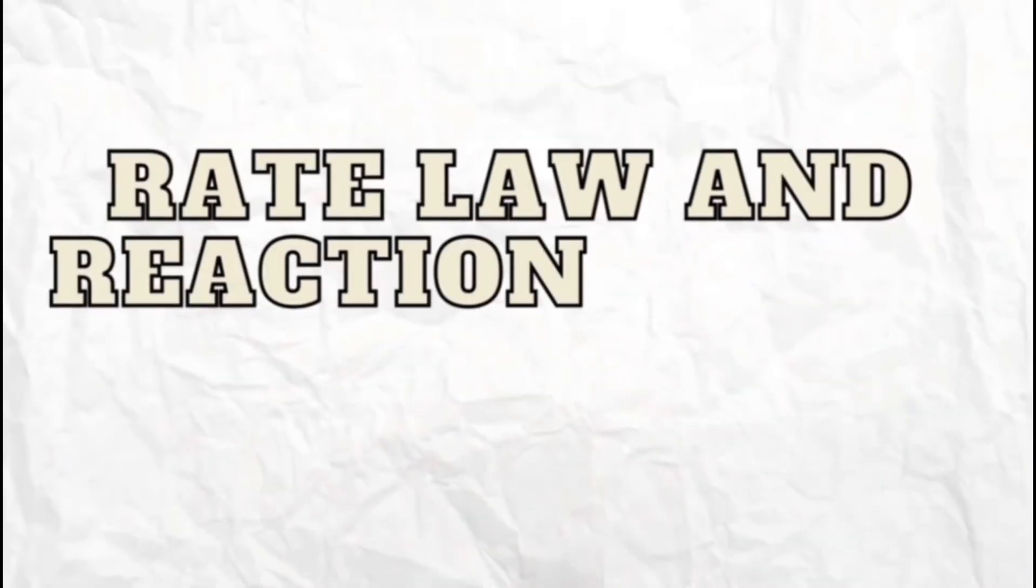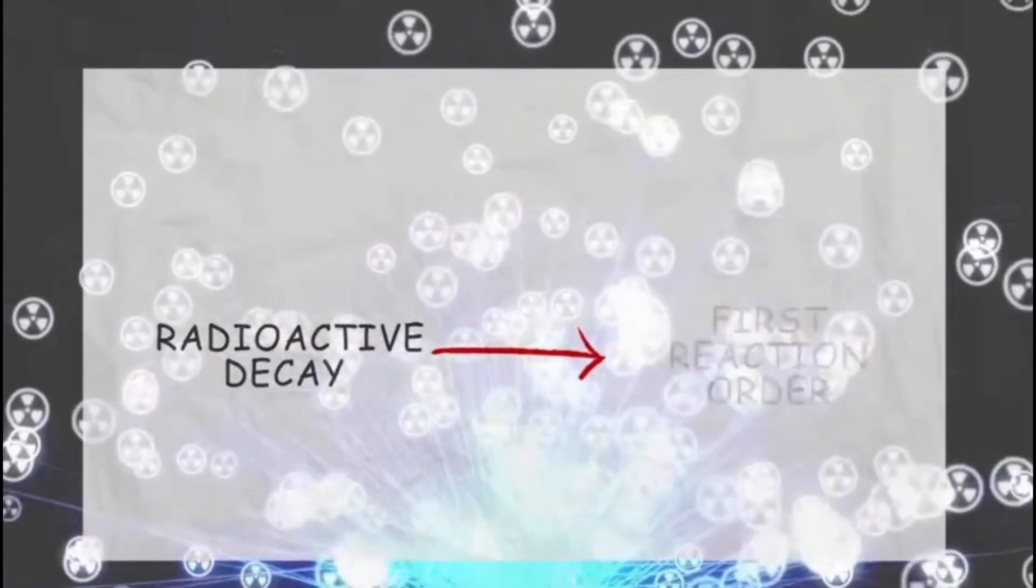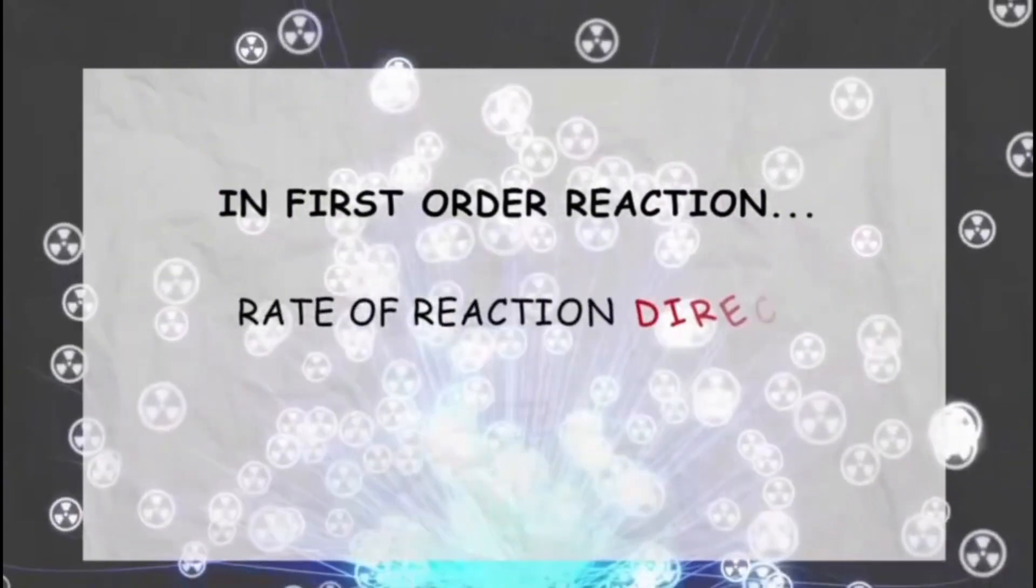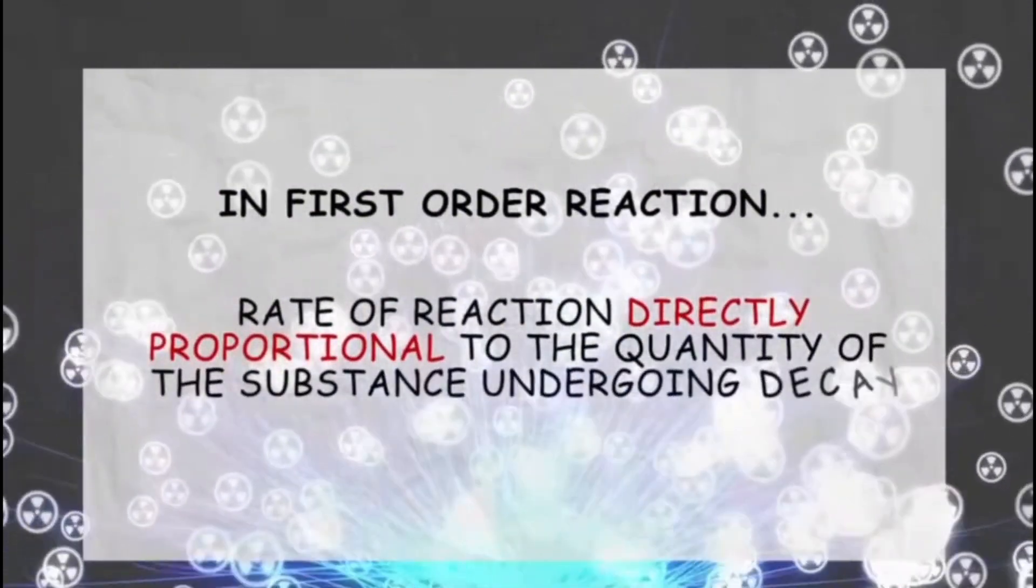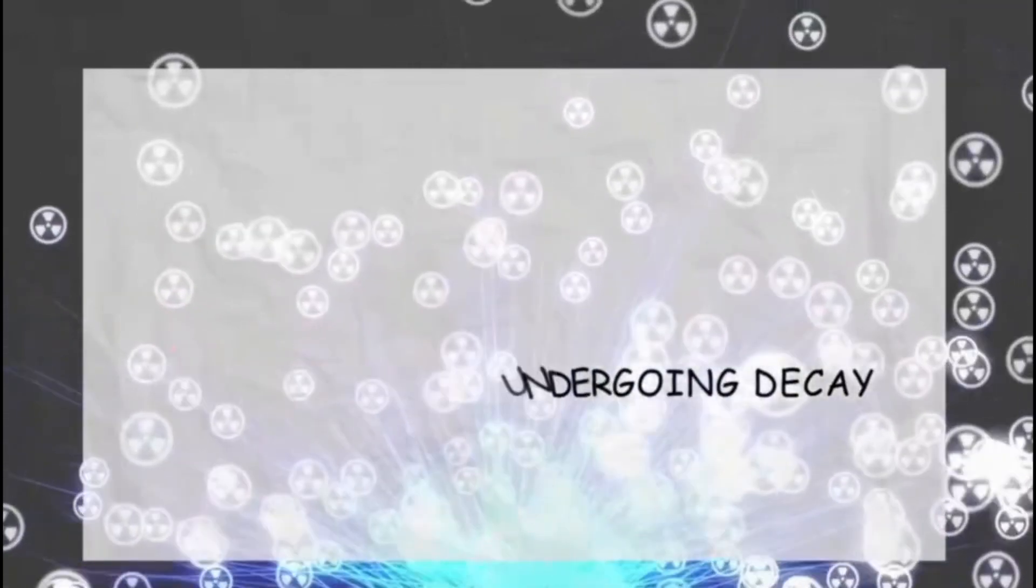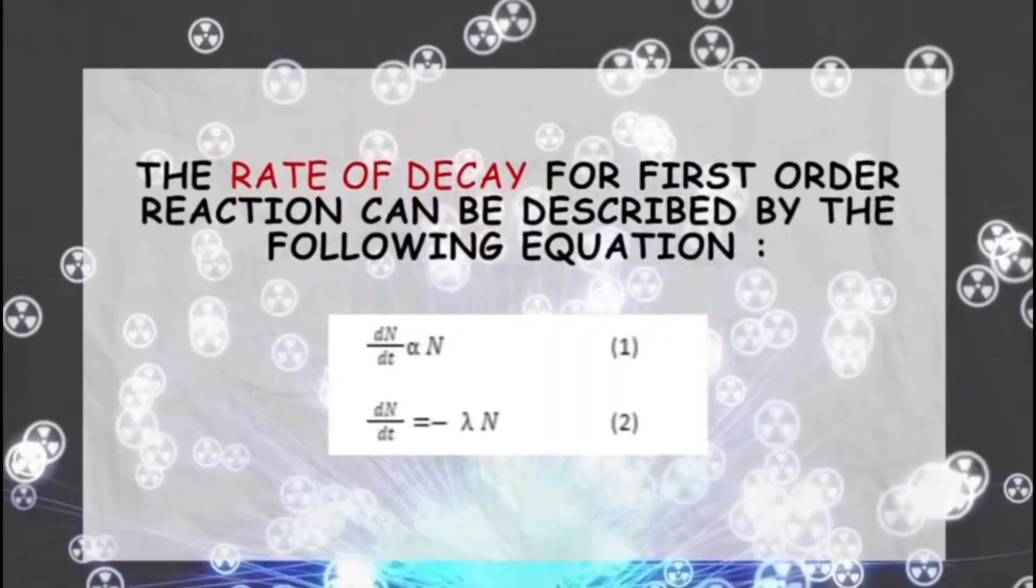Rate law and reaction order of PET. PET involves radioactive decay which is a first order reaction. In first order reactions, rate of reaction is directly proportional to the quantity of the substance undergoing decay. The rate of decay for the first order reaction can be described by the following equation.